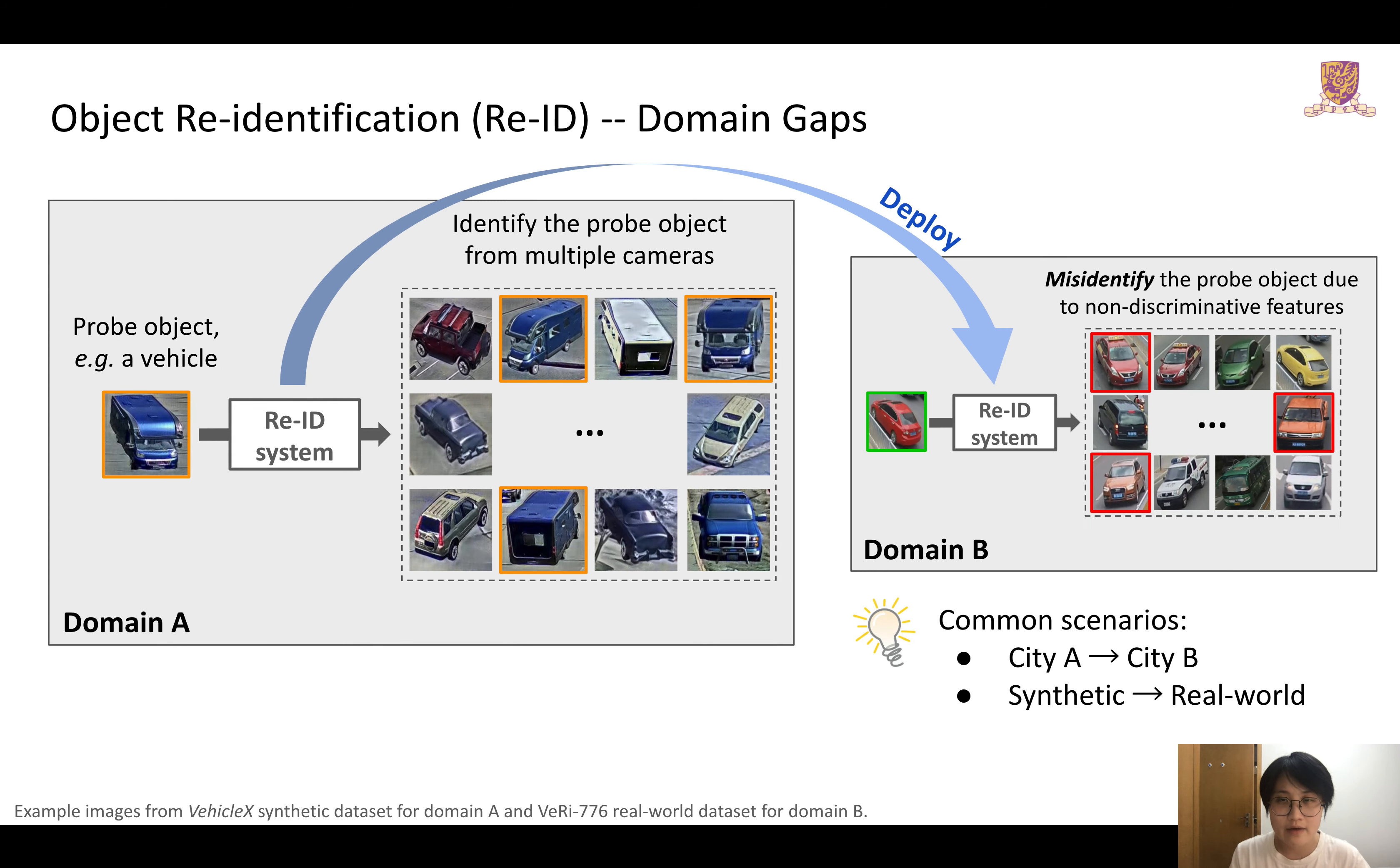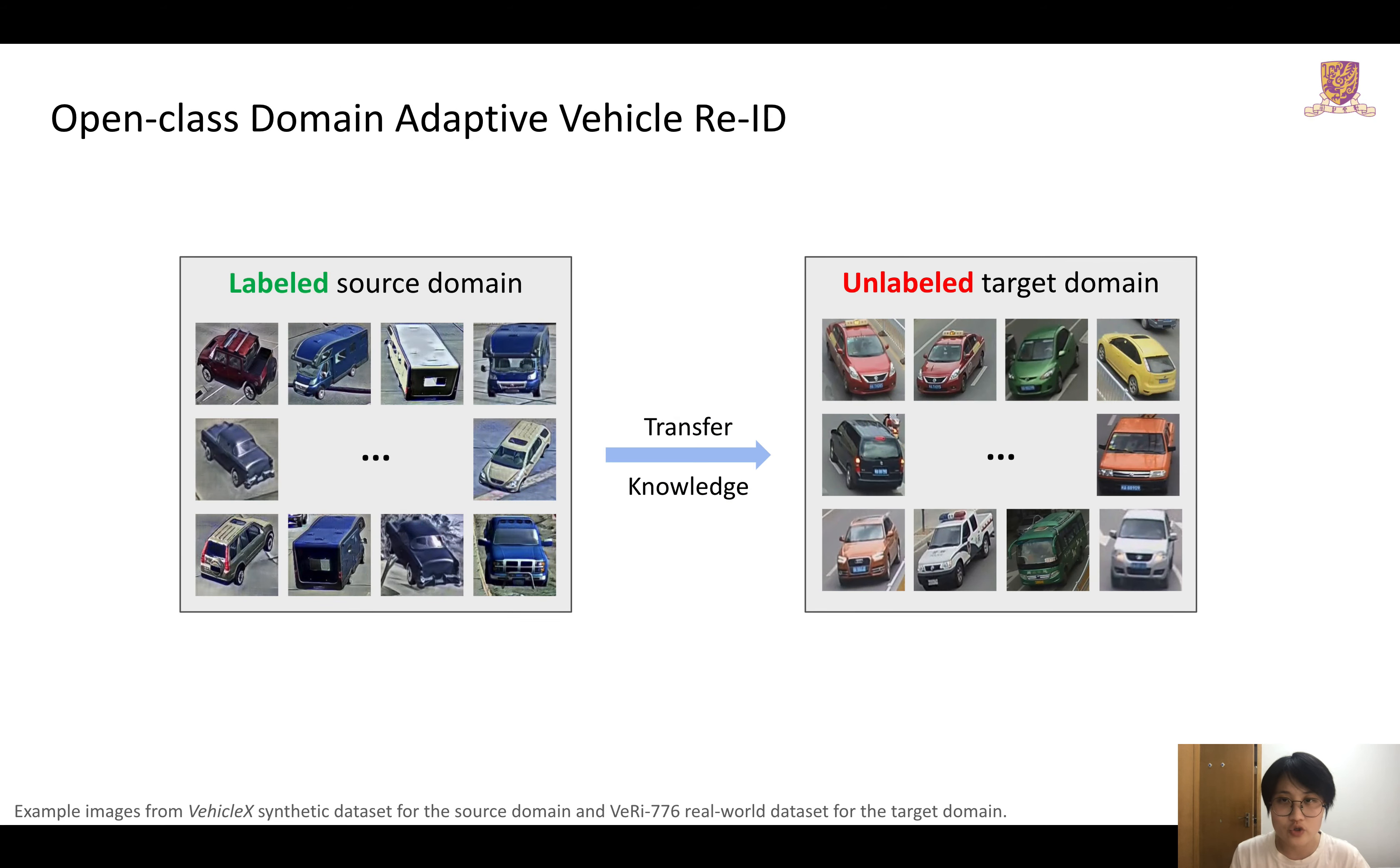However, due to inevitable domain gaps, performance significantly decreases when directly deploying the model to a new domain. Domain-adaptive Re-ID is therefore introduced to transfer the learned knowledge from the labeled source domain to the unlabeled target domain.